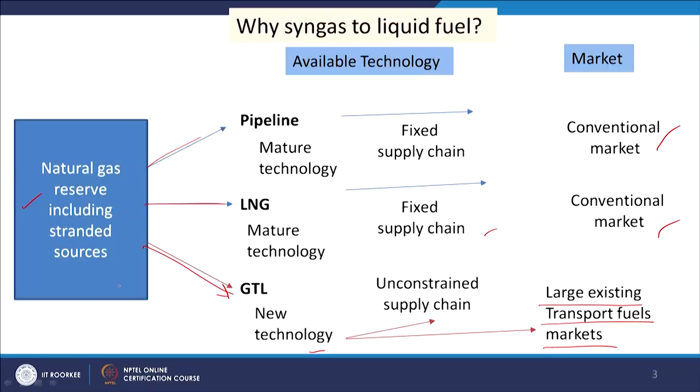Another reason is that natural gas has low energy density, but if it is converted to liquid fuels, the energy density will be increased. So application of this in transport fuel will be easier than using natural gas directly.